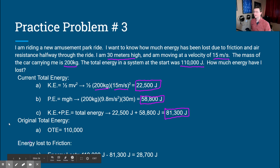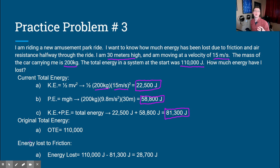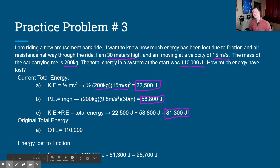We're looking at the difference between my original energy and my current energy. My original energy was 110,000 joules; my current total is 81,300 joules. So the energy lost to friction is 110,000 − 81,300 = 28,700 joules. If there were zero resistance, we would expect zero energy lost. This resistance to motion can be broadly thought of as friction, and that ends this lesson on conservation of energy. If you have questions, please let me know. Have a great day — thanks for watching!